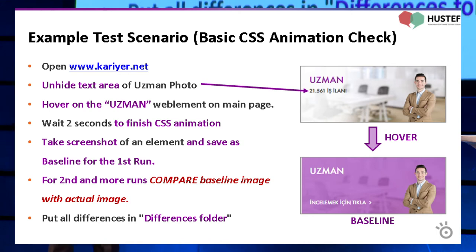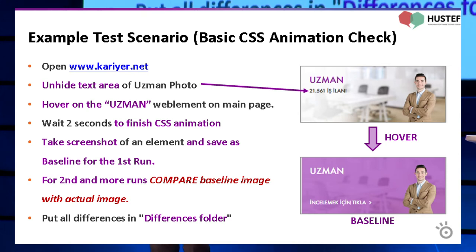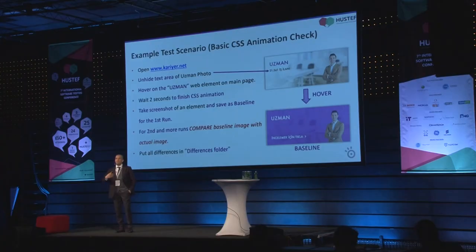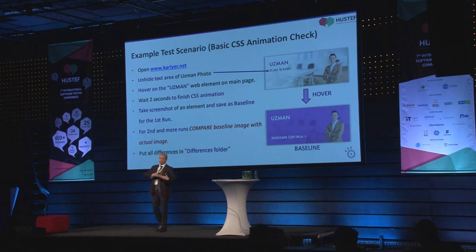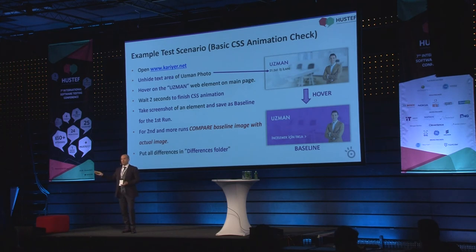I'll give you an insight into this example — you can find the example code and details on swtestacademy.com. In this example, we open CareerNet, then we hide the text area of the 'Uzman' photo because it's dynamic content that changes every time. We have to hide it. Then we hover the 'Uzman' — which means 'specialist' — web element, wait two seconds for the CSS animation to finish, and take a screenshot. On the first run, we save it as a baseline image. On the second and subsequent runs, we compare the actual image with the baseline image. If there's a problem, our test fails and we move that failed result to the differences folder.